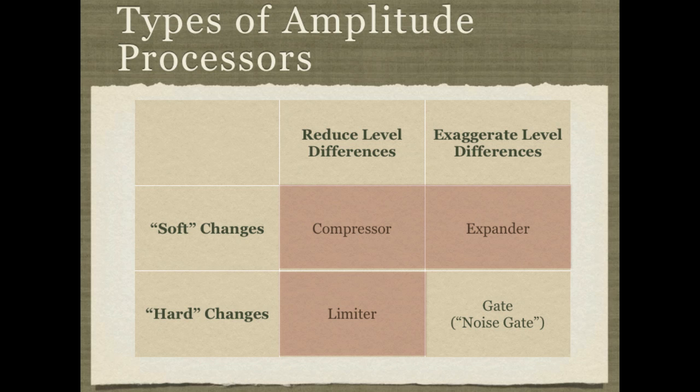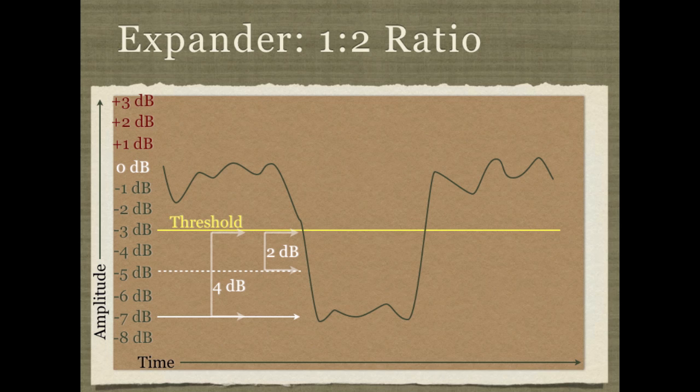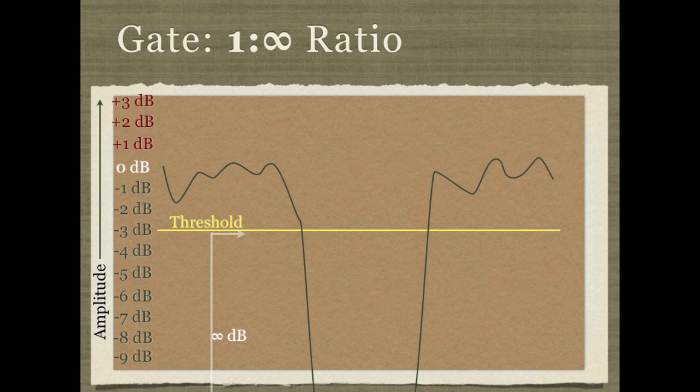The last type of amplitude processor is the gate, or noise gate. And we can compare that to the expander in much the same way as we can compare the limiter to the compressor. So here's our regular expander set to a fairly modest ratio of 1 to 2. A noise gate is an expander with a 1 to infinity ratio.